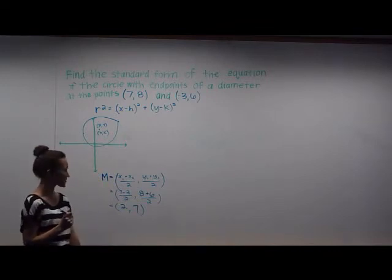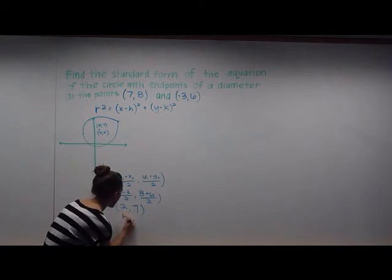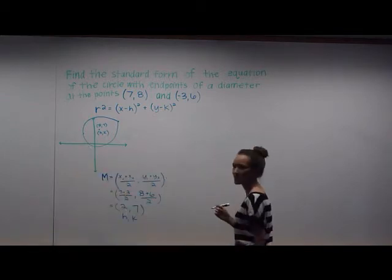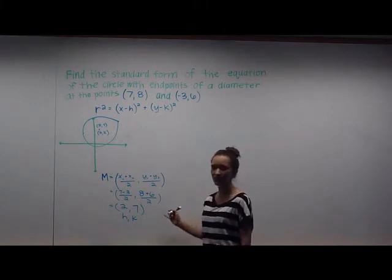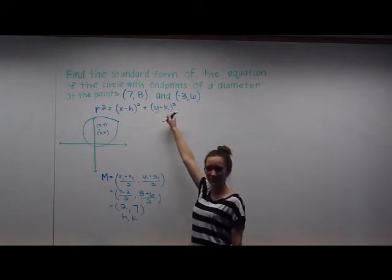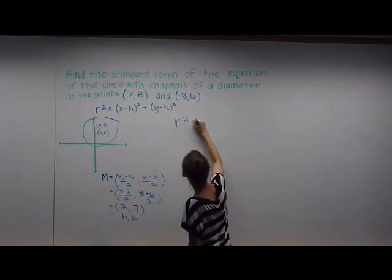And these coordinates are also called h comma k. Now what we're going to do to find r², we're going to plug in the midpoint we just found, (h,k), into the standard form of the equation.